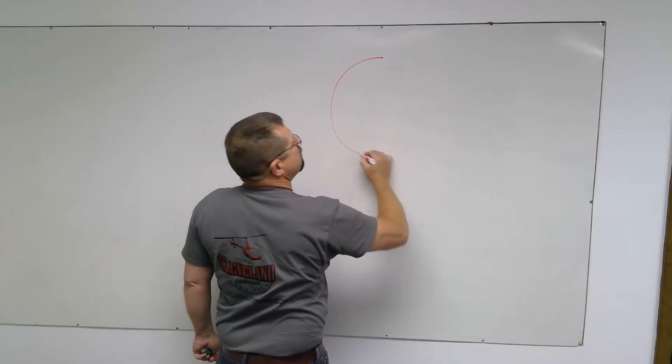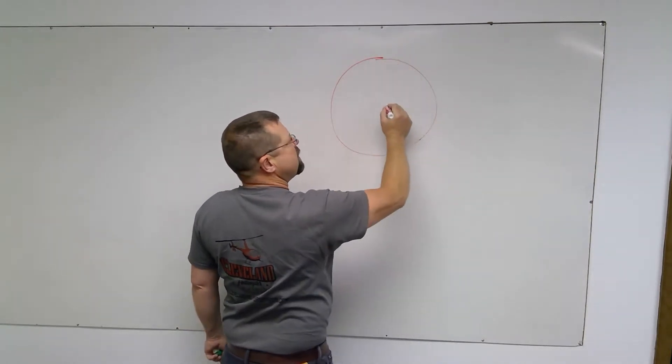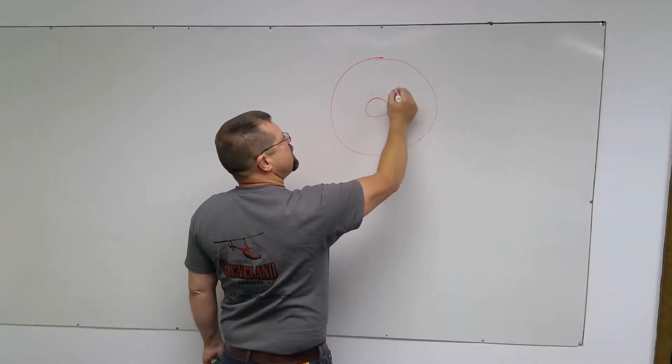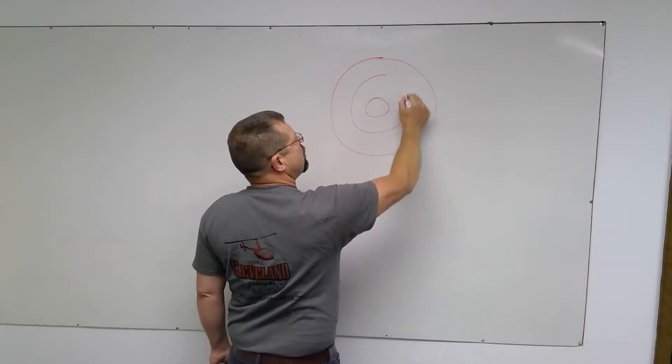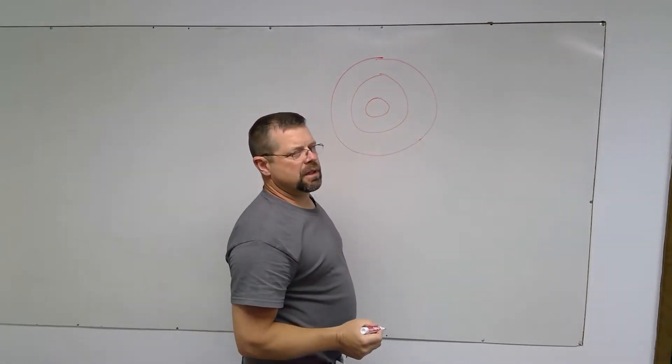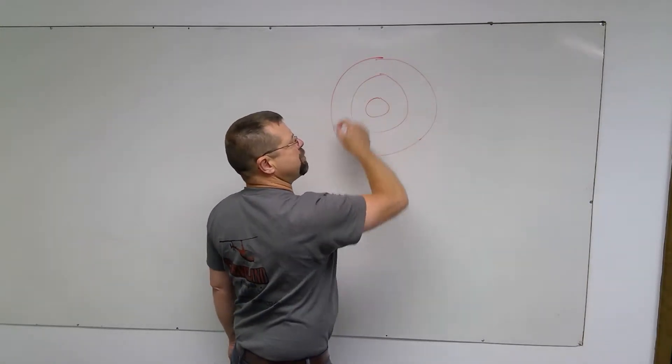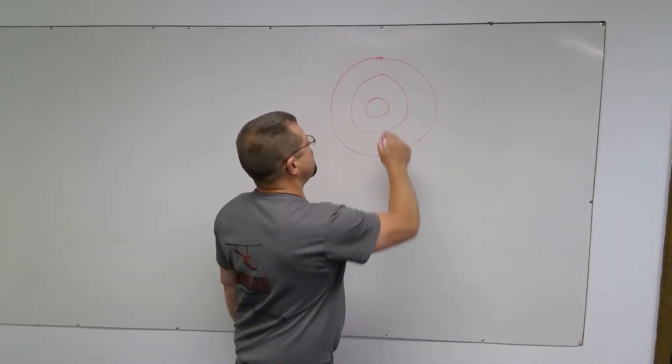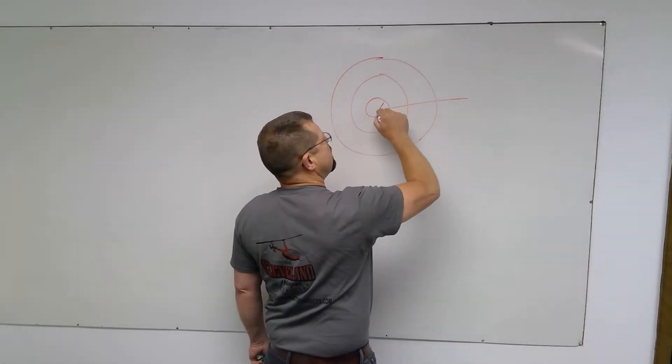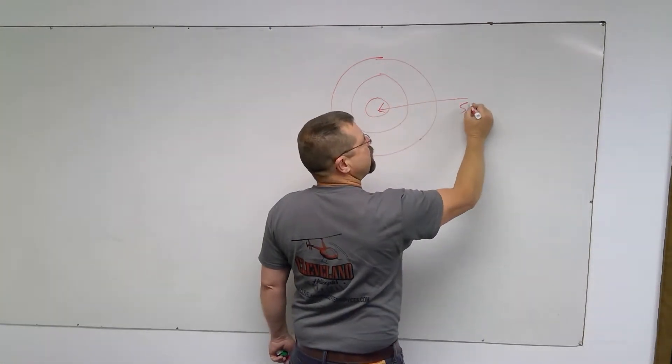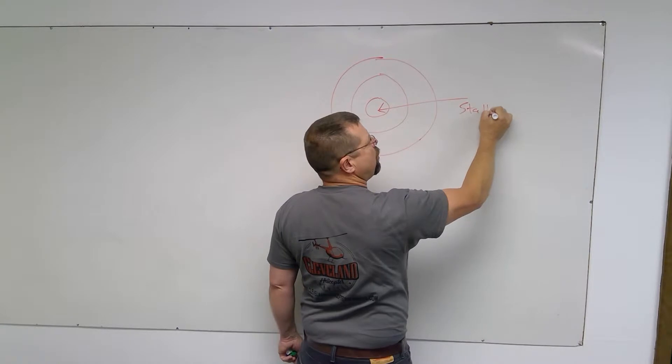Regardless of which way the rotor system turns, there are three regions that you need to know in the rotor system during an autorotation. So this is a top view of a spinning rotor system. The center is referred to as the stalled region.